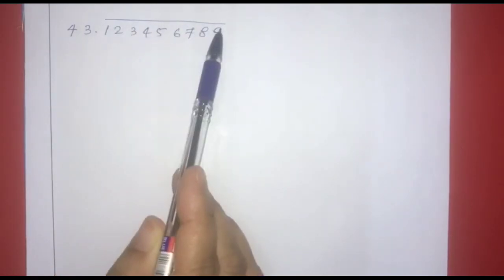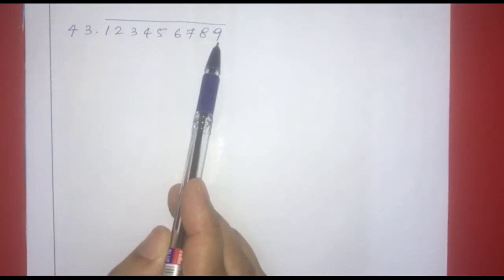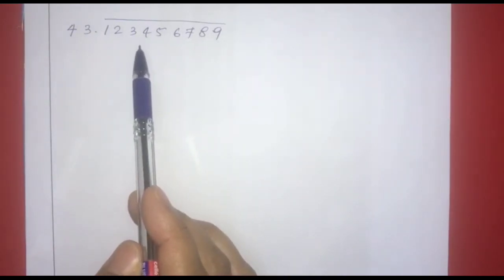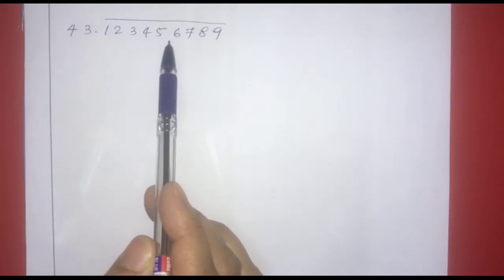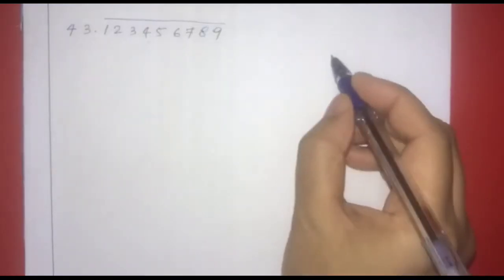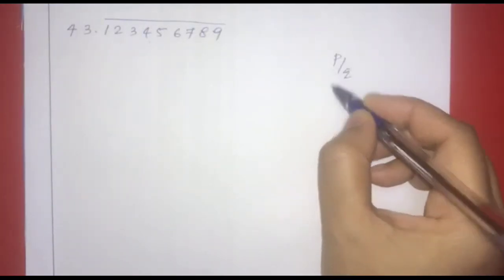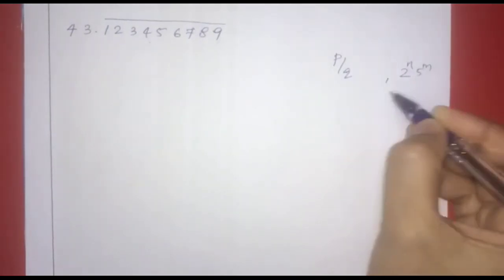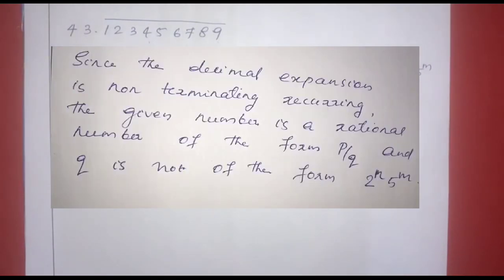The third number has a non-terminating repeating decimal expansion. Since the decimal expansion is non-terminating recurring, the given number is a rational number of the form P by Q. And Q is not of the form 2 raised to n into 5 raised to m — meaning the prime factors of Q will include primes other than 2 and 5.